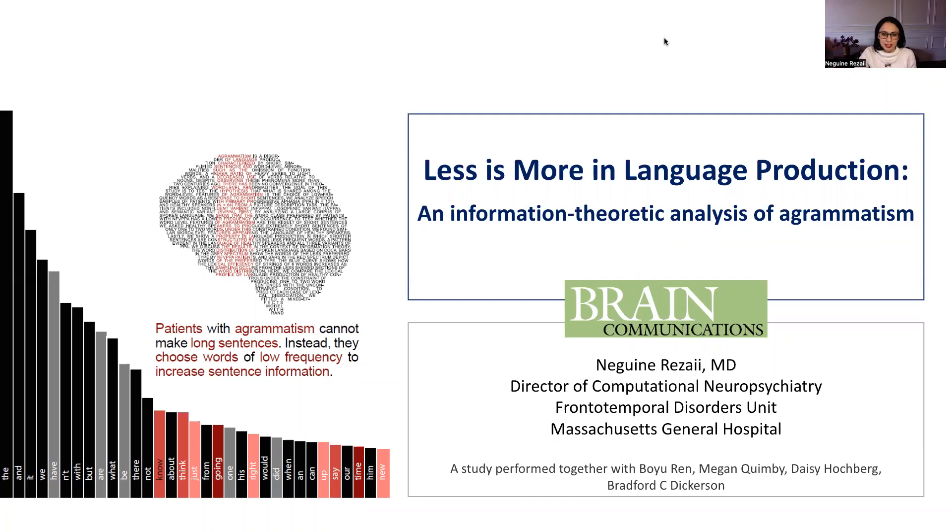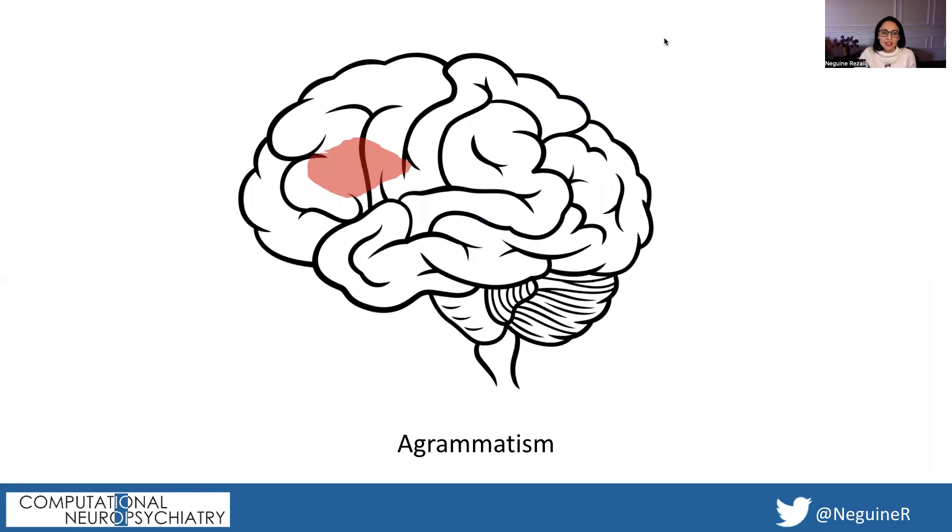My name is Negin Rezaei and I'm going to talk about less is more in language production and information theoretic analysis of agrammatism. Lesions to the left inferior frontal regions of the brain are associated with a particular style of language production known as agrammatism.